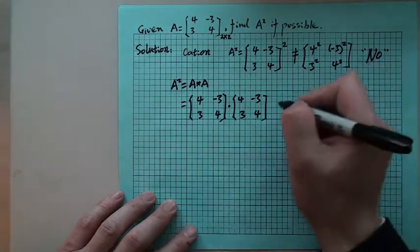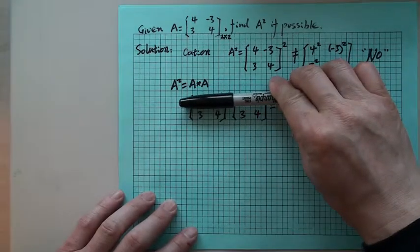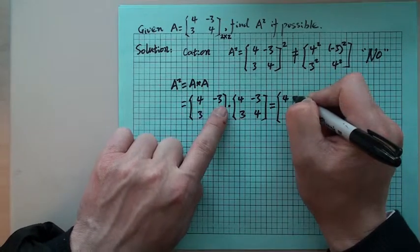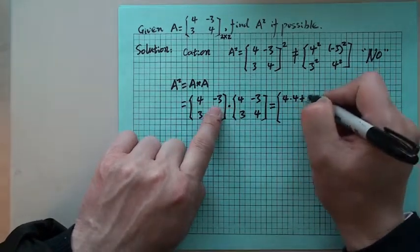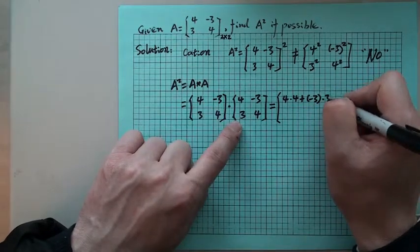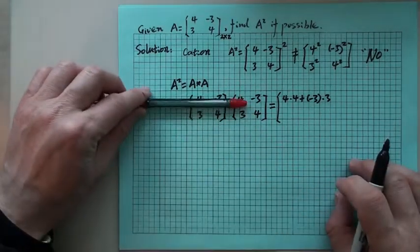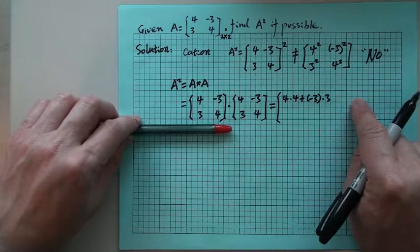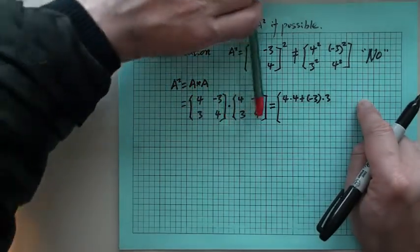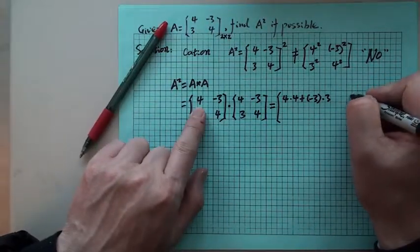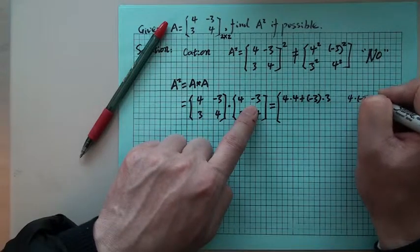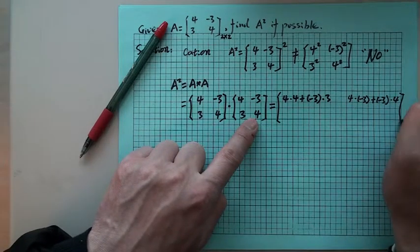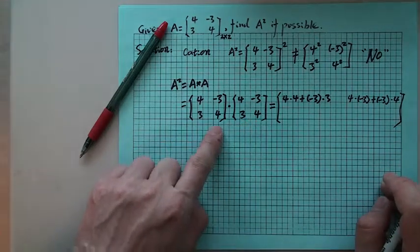Now, you want to do the first row times the first column. So that will be 4 times 4, plus negative 3 times 3. Then the second element on the first row will be the first row times the second column. So that will be 4 times negative 3, plus negative 3 times 4. Now we are done with the first row.